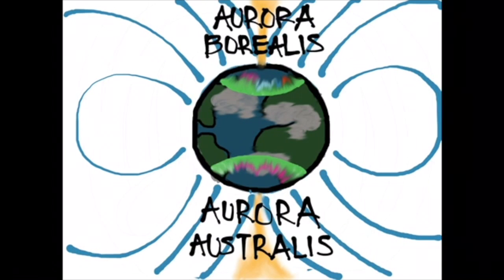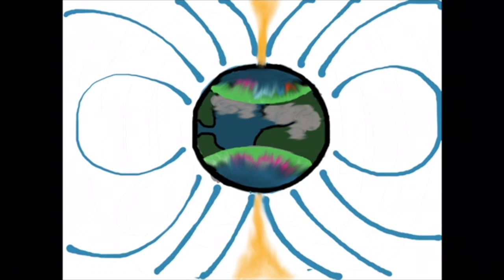Aurora Borealis is at the North Pole and Aurora Australis is at the South Pole. The stronger the solar wind is, the farther away from the poles you can see the auroras.